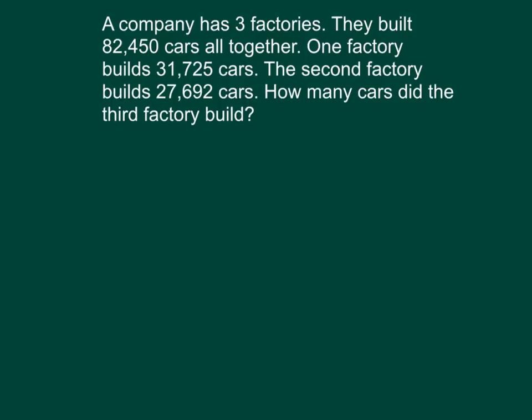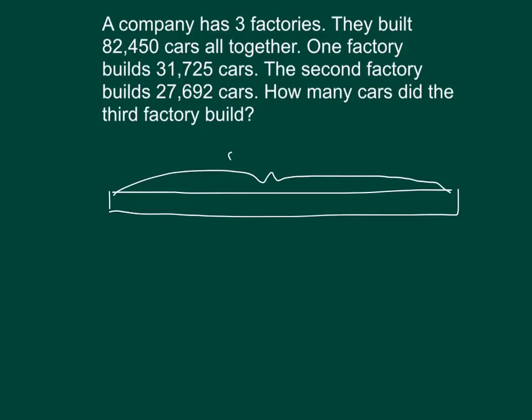What's the known information? One of the knowns is how many cars they built all together. We're talking about three different factories. So, the whole amount or what they built all together, we know as 82,450 cars. And we know that this was made up of one factory, two factories, and three factories. So, one of the factories, they built 31,725 cars. And what we'll do is that we will also, from that 82,450, we'll also mark off for the second factory, 27,692.